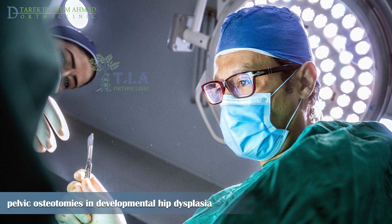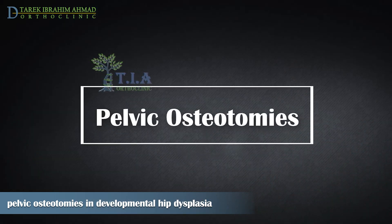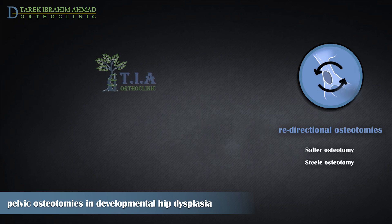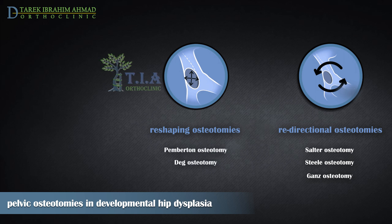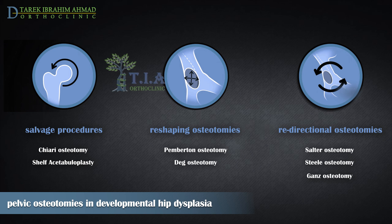We recommend routine pelvic osteotomy at the time of open reduction for all patients over the age of 18 months. Pelvic osteotomies can be broadly grouped into three types: redirectional osteotomies such as Salter osteotomy, triple osteotomy (Steel), and periacetabular osteotomy (Ganz); reshaping osteotomies such as Pemberton and Daga osteotomy; and salvage procedures such as Chiari osteotomy and shelf procedure. The choice depends on the age of the child, the type of dysplasia, and the status of the triradiate cartilage.